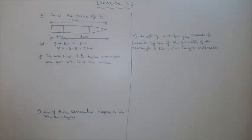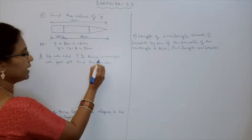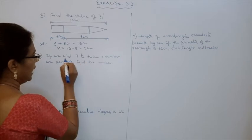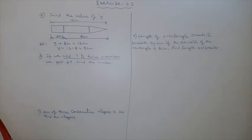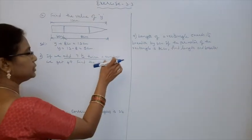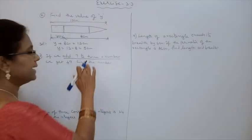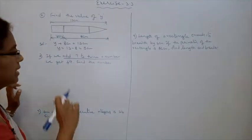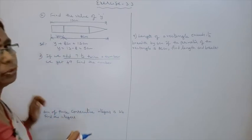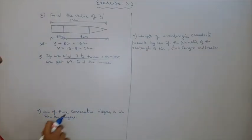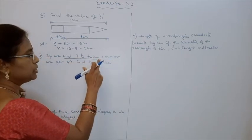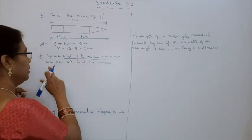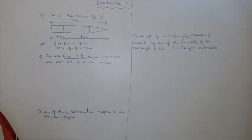Second problem: if we add 7 to twice a number. What is the meaning of twice a number? 2 times a number. Here we have to assume the number as x. Twice a number is 2x. Add 7 gives 2x plus 7. That is the meaning of that sentence. If we add 7 to twice a number, means 2x plus 7, we get 49.